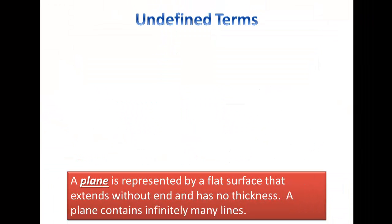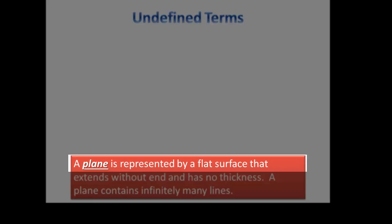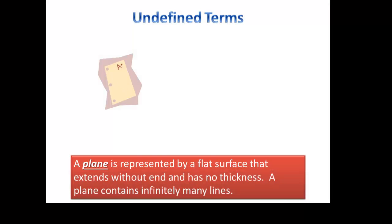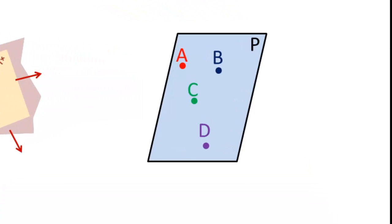The last undefined term is a plane. A plane is represented by a flat surface. Think of a piece of paper, except that a plane would continue in all directions infinitely. It would just go on and on in all directions and it has no thickness. We represent a plane by using a parallelogram. We can name it by this letter that's in the right hand corner, and we could just call it plane P.